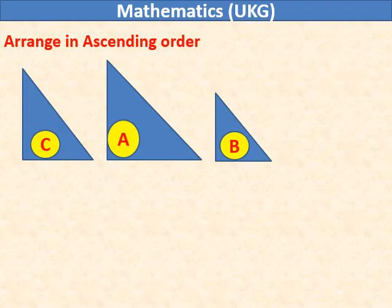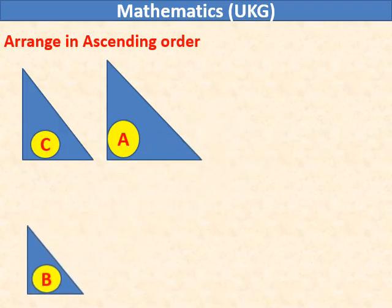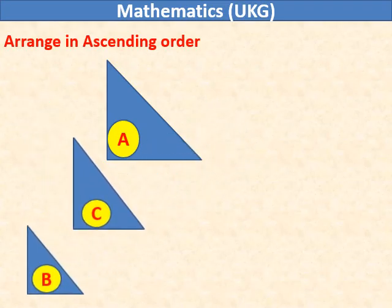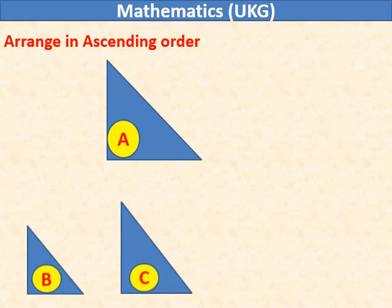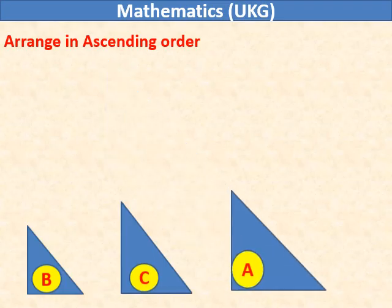Arrange the triangles in ascending order. That means from smallest to largest. B is the smallest triangle. Triangle C will come in between, and A is the largest triangle.